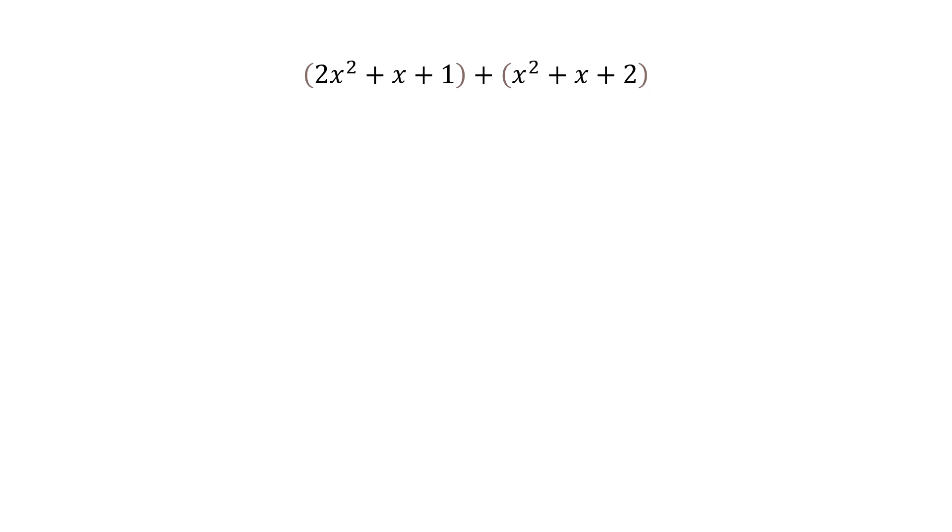So what we would have done in the past is look on the outside. And if there's nothing on the outside, the parentheses just drop. If there's a positive on the outside, the parentheses just drop because mathematically, what we would be doing is distributing a positive one. And anything times positive one is the same thing. So that wouldn't change anything.